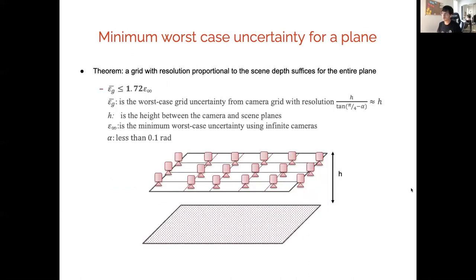We extend the solution to a plane where we can select a camera grid with a particular resolution that's proportional to the scene height, which guarantees a 1.72 approximation ratio compared to reconstruction quality of infinitely many cameras on this plane.